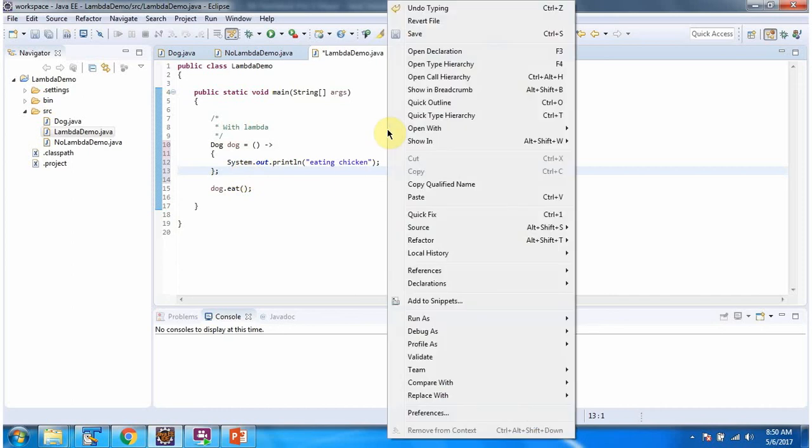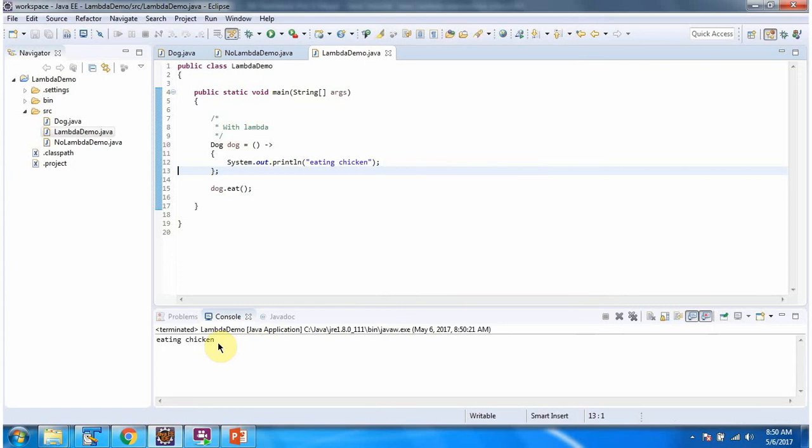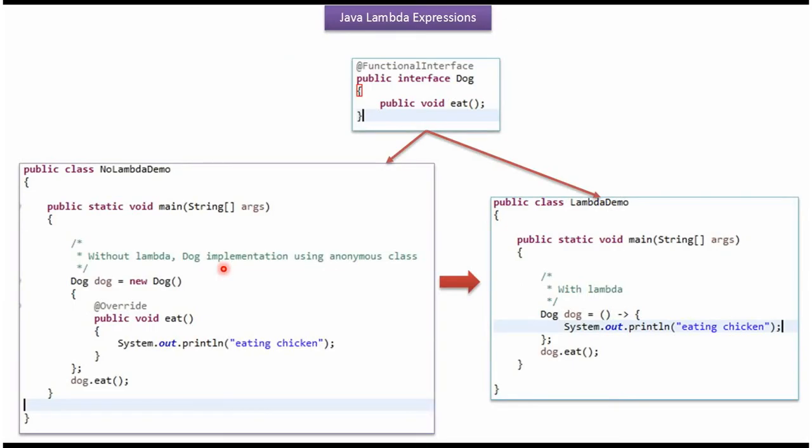I am running this program. And we got the output. We have just seen without Lambda, how we can provide implementation of dog using anonymous class. And with Lambda, how we can provide implementation of dog.